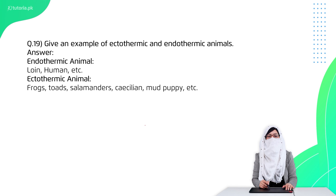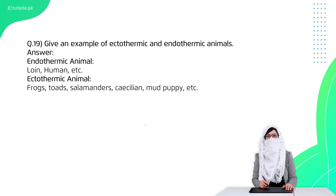Question 19 is: give examples of endothermic and ectothermic animals. Ectothermic animals regulate their temperature according to the environment — examples include amphibians and reptiles. Endothermic animals maintain a constant body temperature through internal mechanisms.